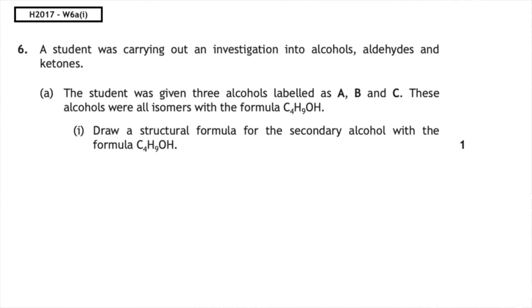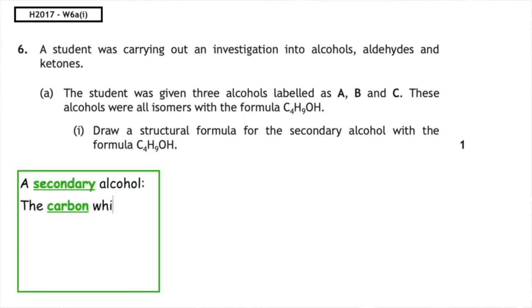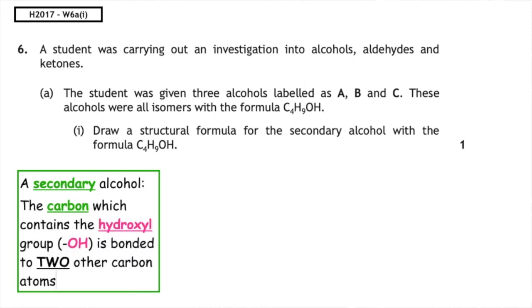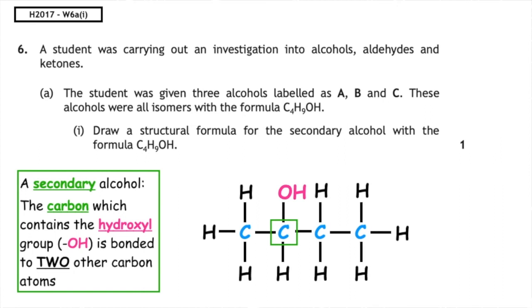So firstly we have to know our definition. A secondary alcohol, the carbon which contains the hydroxyl group, is bonded to other carbon atoms. So if we draw out the carbon containing our hydroxyl group, we bond our carbon so that we know that the carbon which contains the hydroxyl group has two carbons bonded to it and then we fill out with our hydrogens and that makes us draw butan-2-ol.